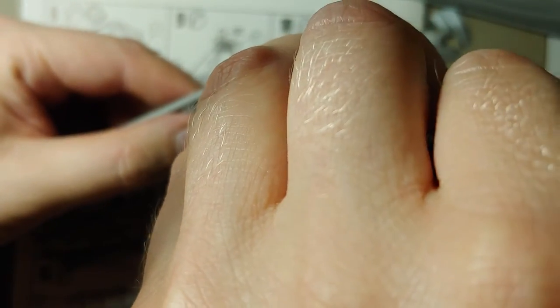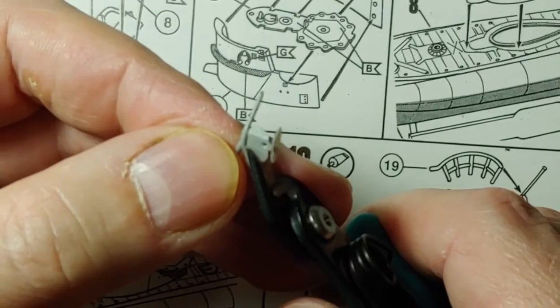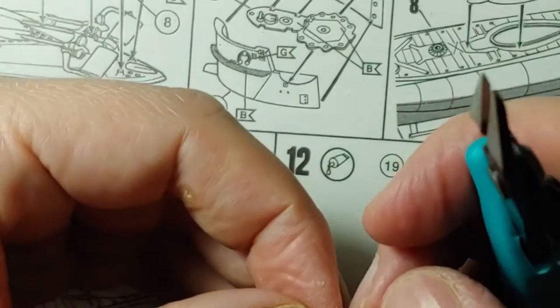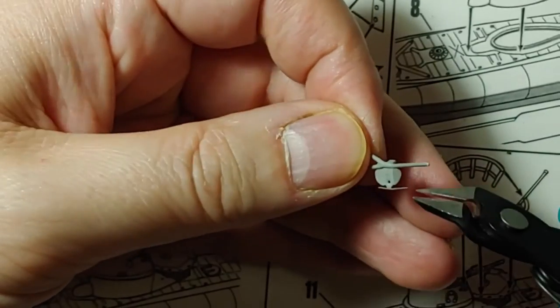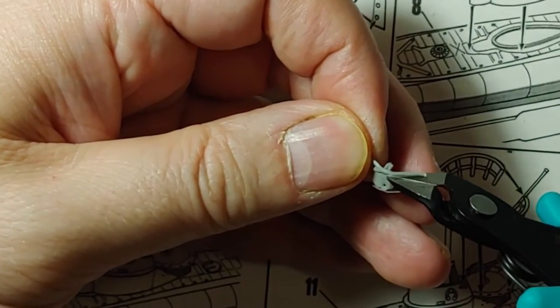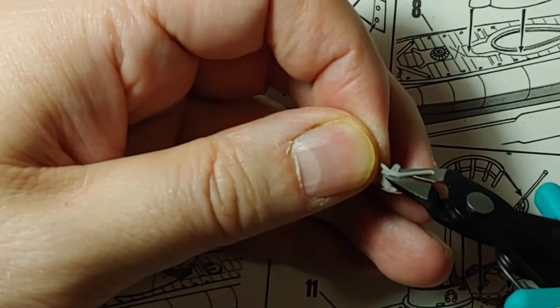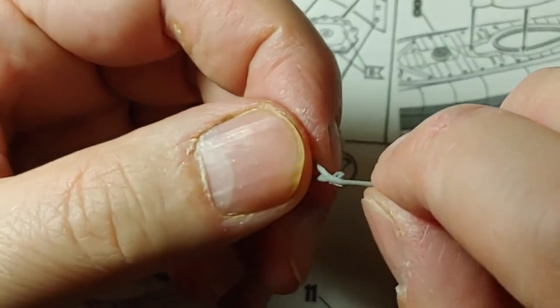There you see the bits that need to go, so I'm just going to use my very sharp and very small cutting implements here and just get rid of the big ones, and then just some fine sandpaper to make sure that everything is smooth and there's nothing sticking out afterwards.